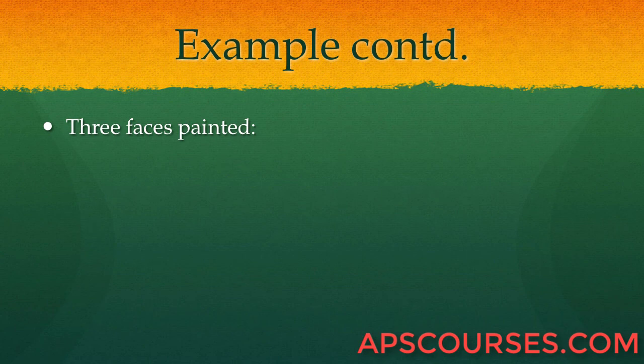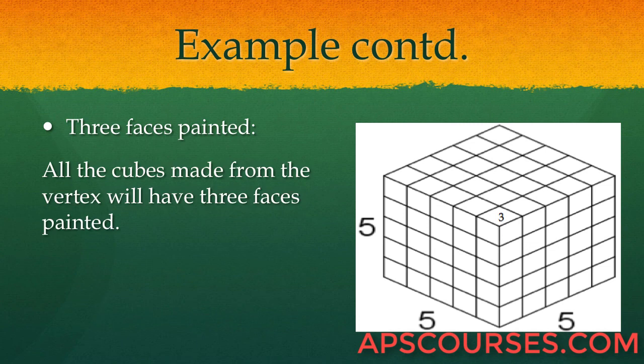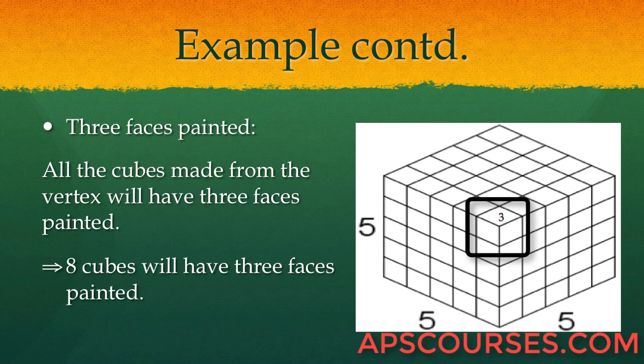Cubes with 3 faces painted: all the 1×1×1 cubes that lie on a vertex will have 3 faces painted. Since a cube has 8 vertices, exactly 8 cubes will have 3 faces painted.